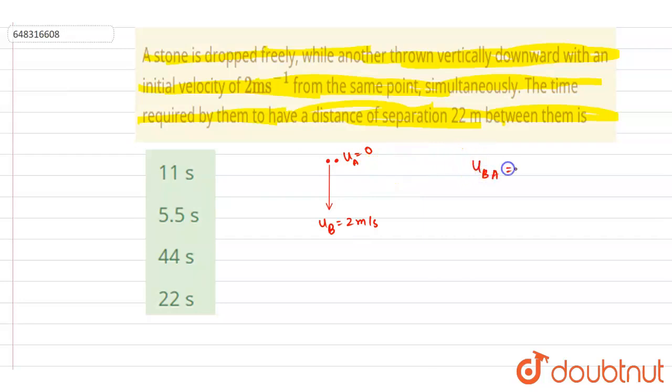down the velocity of B with respect to A, it is 2 minus 0, which is 2 meters per second in the downward direction. And acceleration - if you write down, they both are having the same acceleration g and g, so it will be zero. Now if you see, we want the time required to have a separation.